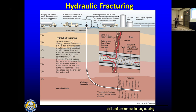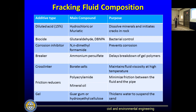In frack fluid composition there's a lot of discussion. The EPA website contains hundreds of chemicals that have ever been used in hydraulic fracturing operations anywhere, ever. Nobody in their right mind is going to put all these chemicals in the frack fluid. The chemicals range from acids to biocides to cross-linkers — all with some purpose in the frack business — but you're not going to put all of them into one job.